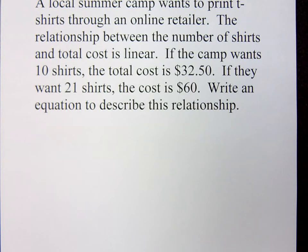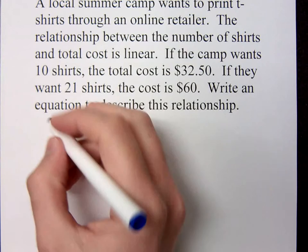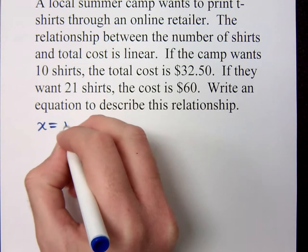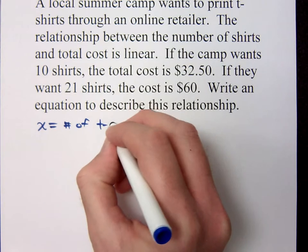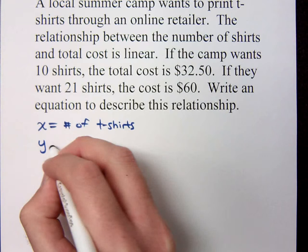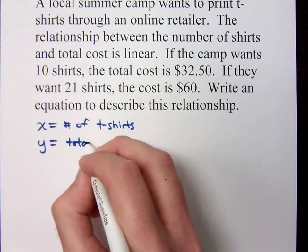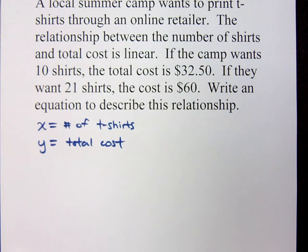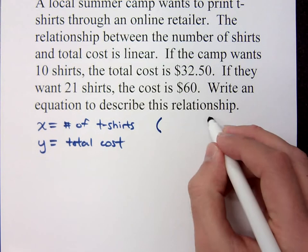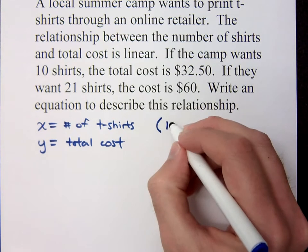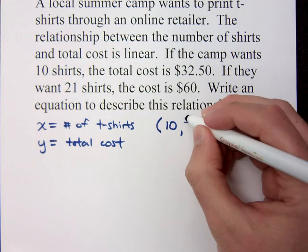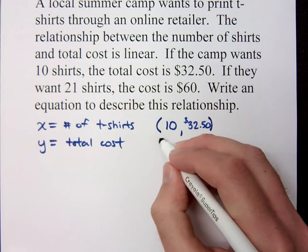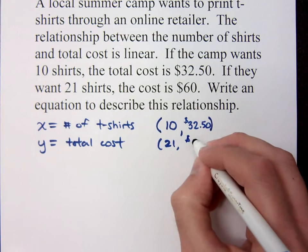When you see stuff like this, you need to take the data and interpret it in a graphical sense. One of the things we can do is write our variables and ordered pairs. If x is the number of t-shirts and y is the total cost, then we know: if you order 10 shirts it costs $32.50, or if you order 21 shirts it costs $60.